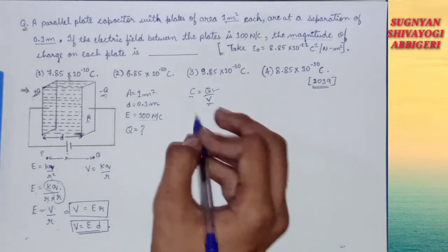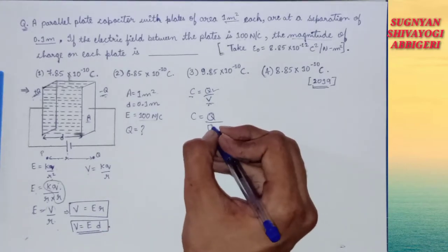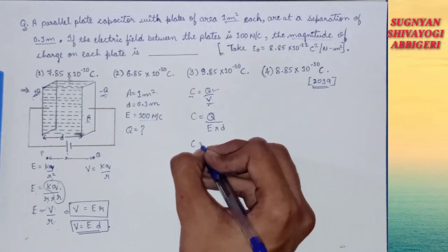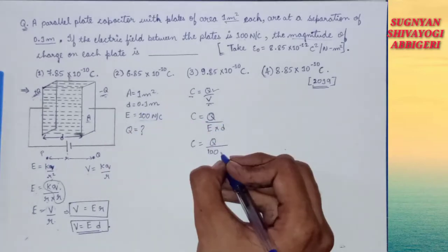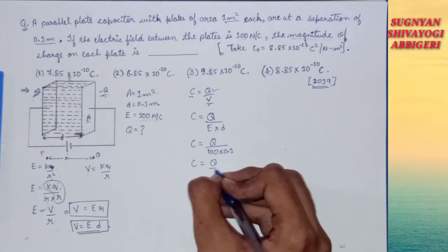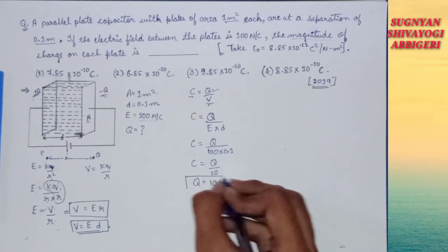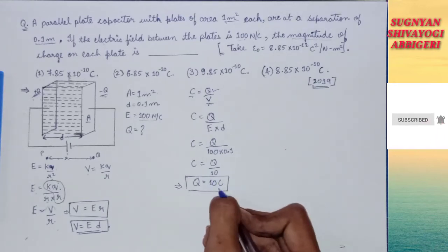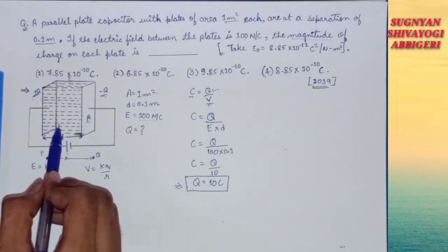Now let us apply this. From C = Q/V and V = E × d: C = Q / (E × d) = Q / (100 × 0.1) = Q / 10. So C = Q/10, which gives us Q = 10C. We have expressed Q in terms of C, but we still need the value of C. We will apply the parallel plate capacitance formula to find C.